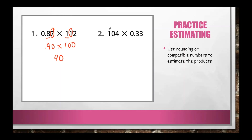Looking at number two, we have 104 × 33. Using compatible numbers, we round 104 to 100. And 33 is closer to 30, so we change that to 30. Multiplying 100 × 30 gives us 3,000.